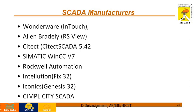Moving on to SCADA software manufacturers. The first and most familiar is Wonderware, with its Intouch software. Other software available includes Allen Bradley, SciTech, Simatic WinCC, Rockwell Automation Software, Intellusion, Iconics, and Simplicity Keda. These are the different SCADA software manufacturers available in industries.